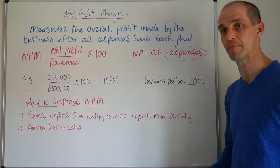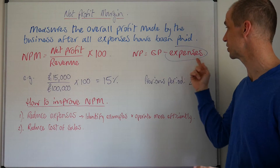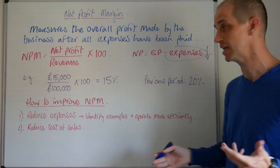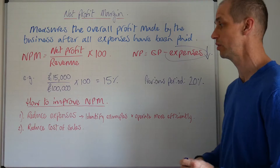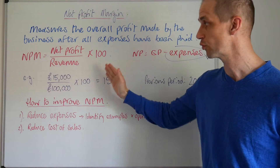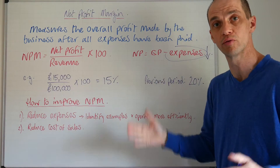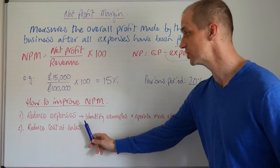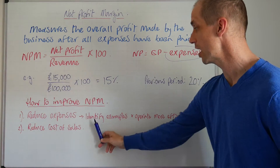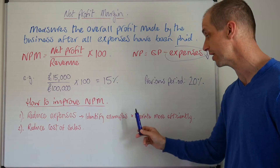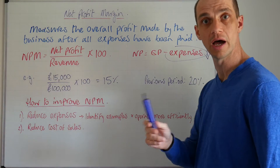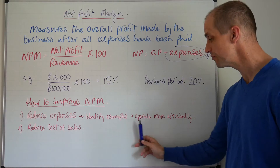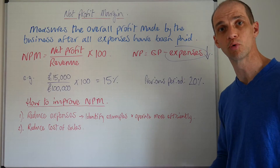So what can we do about this? How can we improve net profit margin? The most obvious way is to reduce expenses — if you can reduce them, that's going to enable you to increase this margin overall. So reduce expenses; there could be examples you can identify in a question. Really, this is about operating more efficiently.